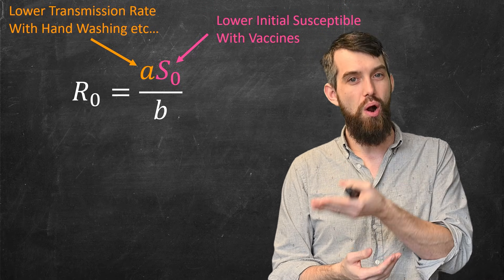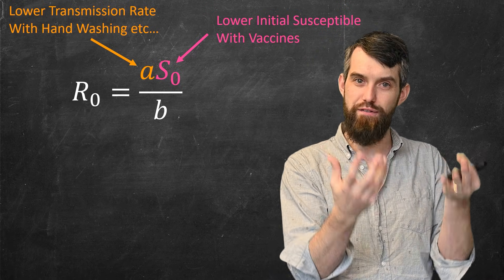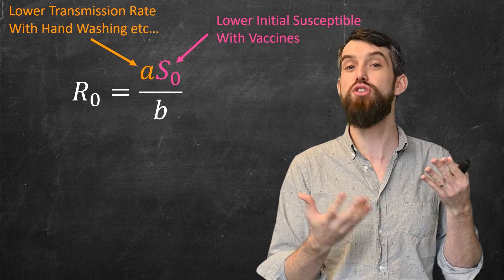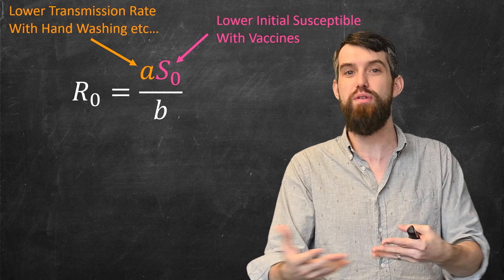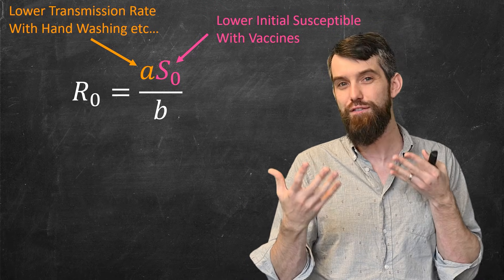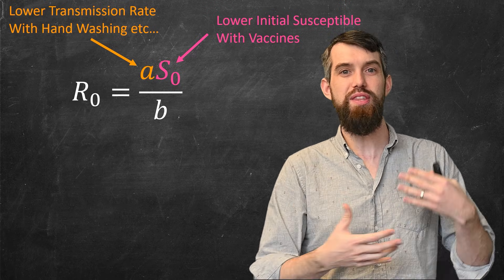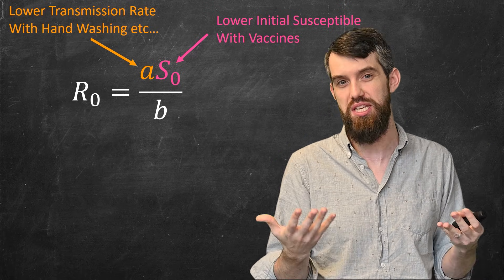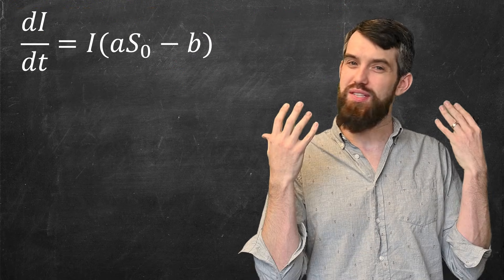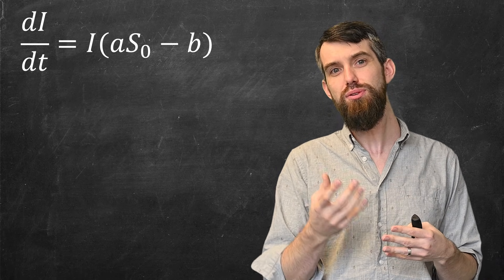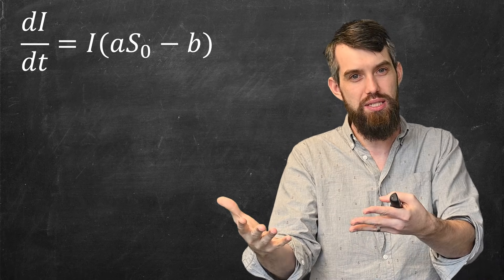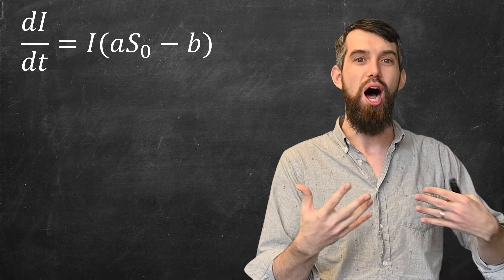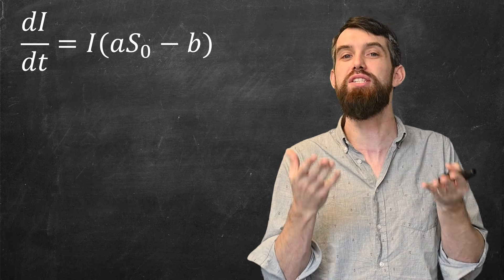The parameter b is a little harder to change — it represents the rate at which infected people become recovered. For most cases, you're just trying to keep people alive and their immune system fights it off, so you can't really affect b too much. Now, this is what happens at time t = 0, but I want to look at what happens around t = 0. I'm going to look at the same dI/dt equation, but now imagine the infected number can increase while assuming S is approximately constant — this approximation is only valid near t = 0.